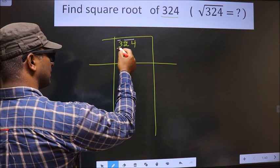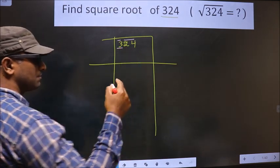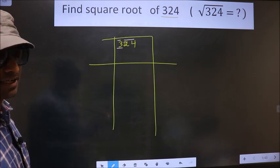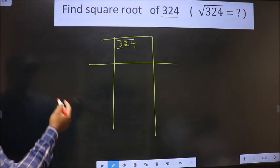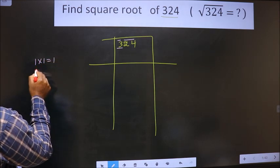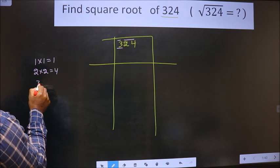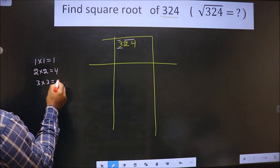Now take the first number that is 3. Now you should check 3 lies between which two square numbers. And the square numbers are these. 1 into 1, 1. 2 into 2, 4. 3 into 3, 9.